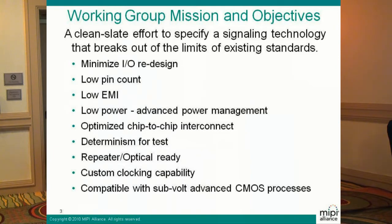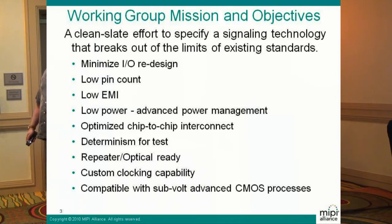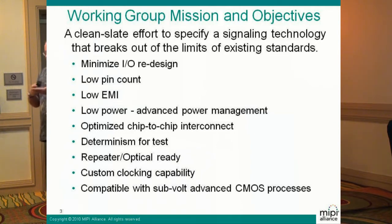What we wanted to do with the physical layer is a clean slate effort — to specify something that breaks out of the normal limits of currently established standards. The reason for this is pretty clear: a phone is a really tiny thing and it's getting smaller every day. So what we want to do is take advantage of the fact that if we have a physical interconnect, we don't have to go over miles of cable. We can save an enormous amount of energy if we just limit the scope of this to just one or two inches.